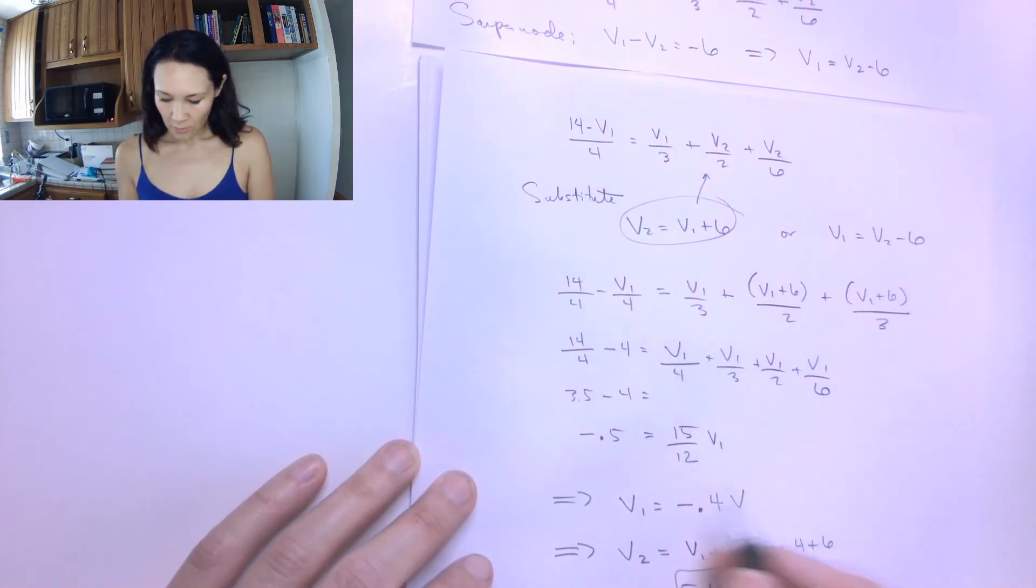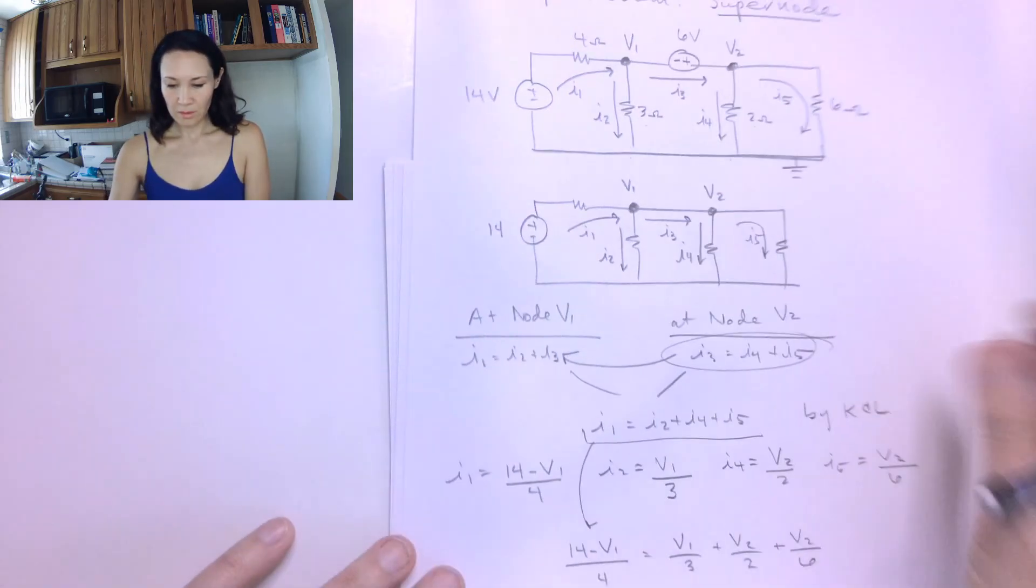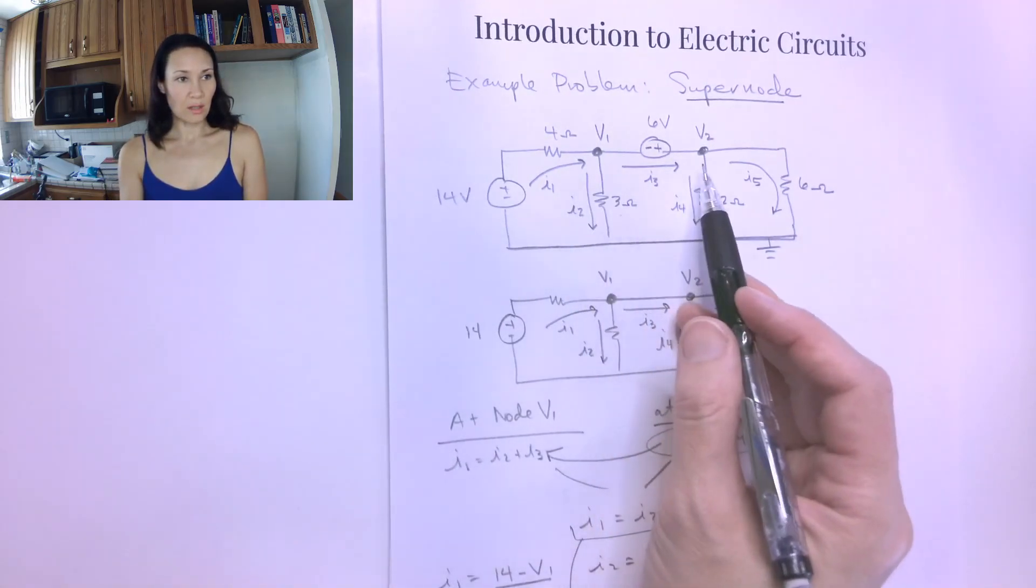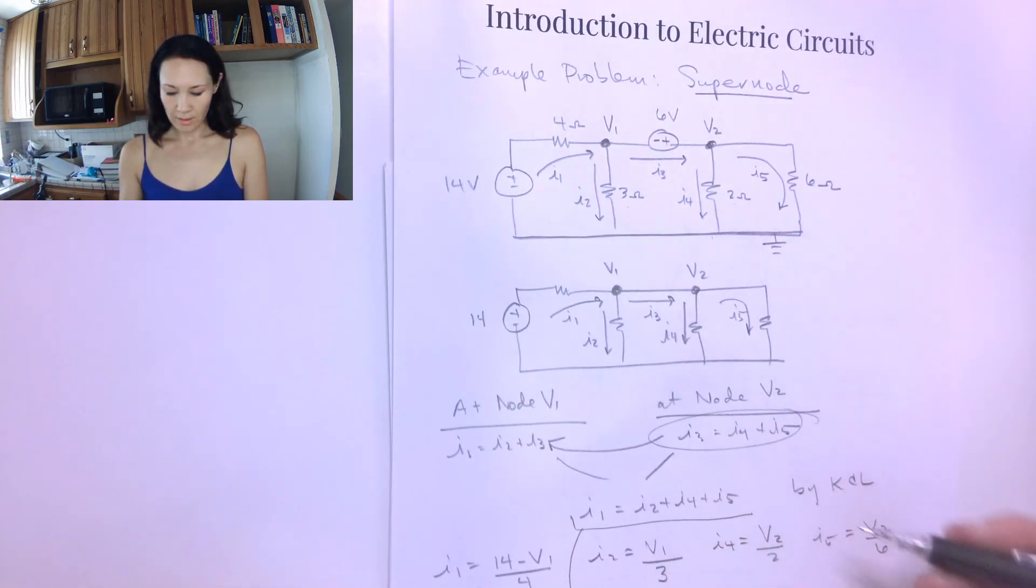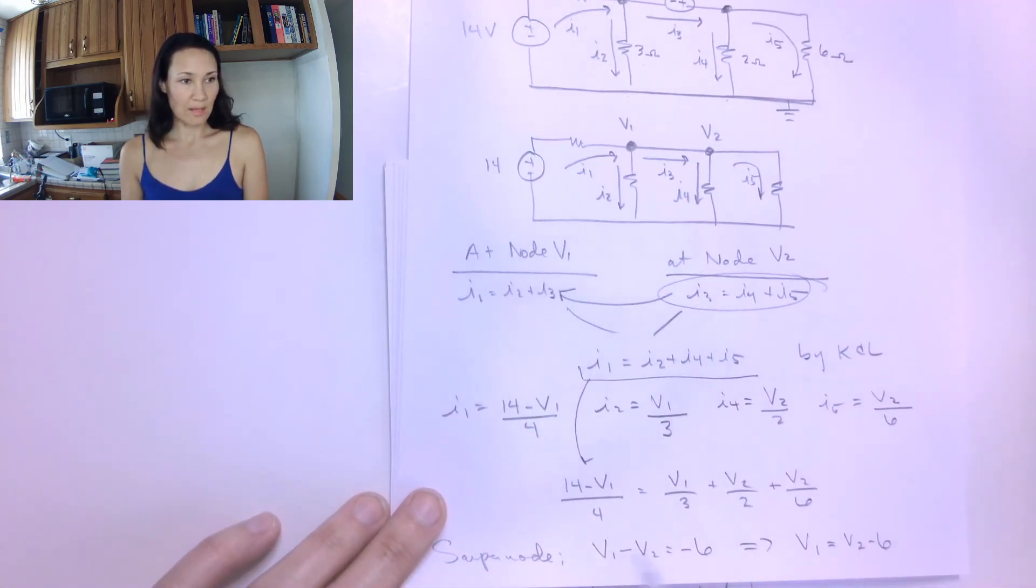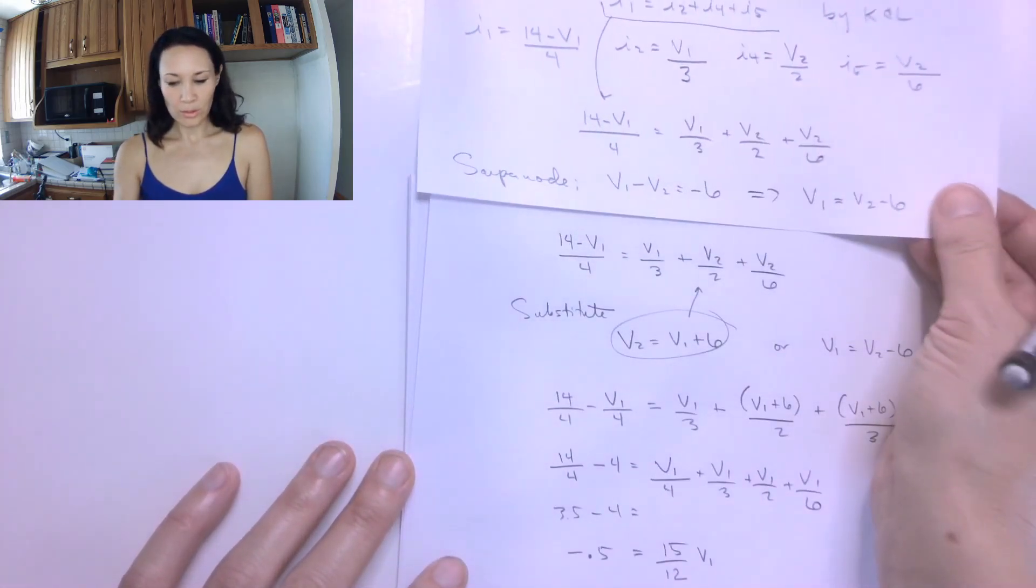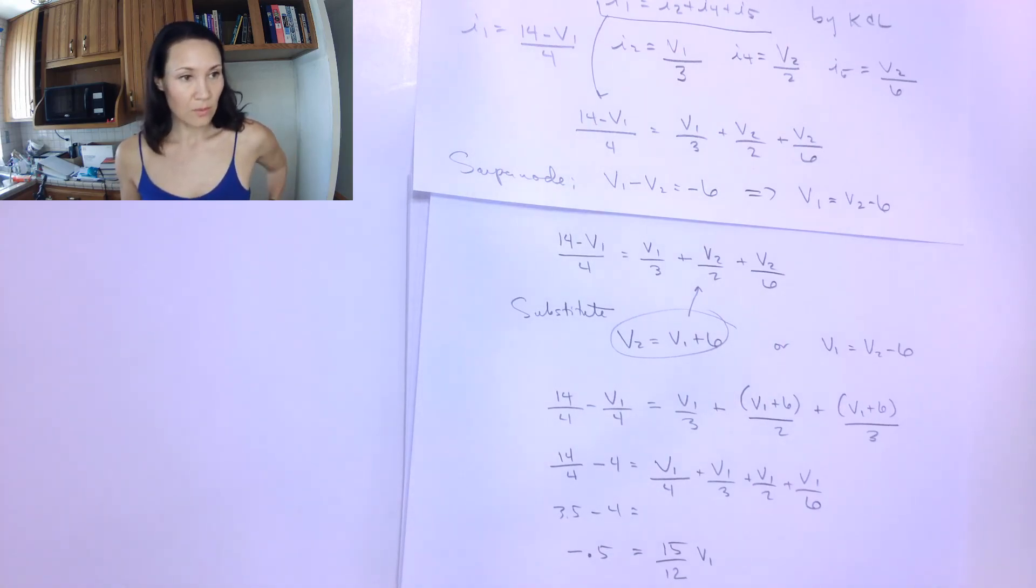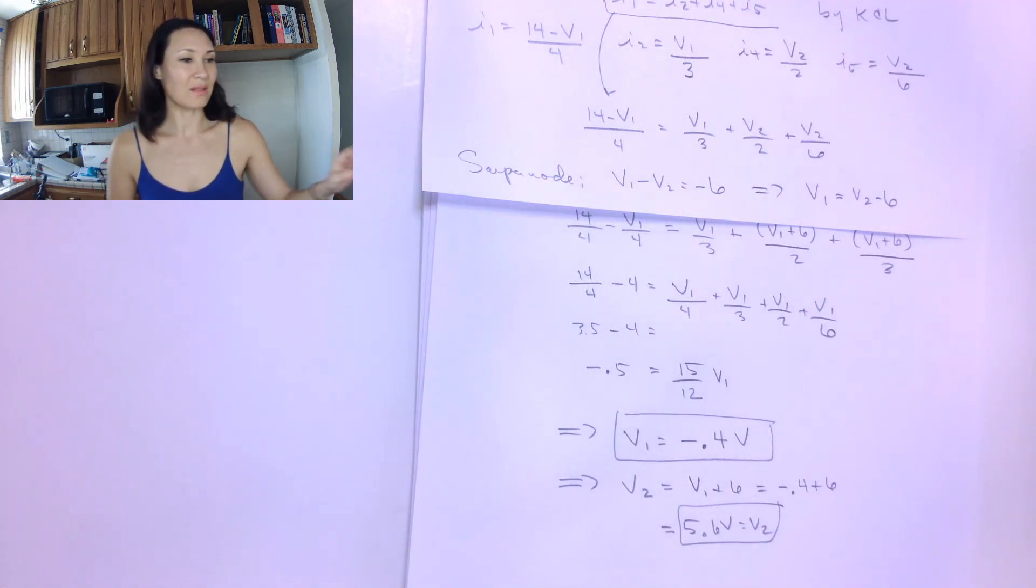So I used this substitution here for the supernode to get my equations for my node voltage equation. And then I reconsider the supernode to get my second equation relating V1 and V2 so I can solve my system of equations with two unknowns. So here's my final answer. Let me know if you have any questions about that.